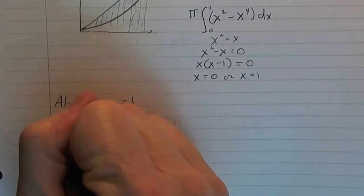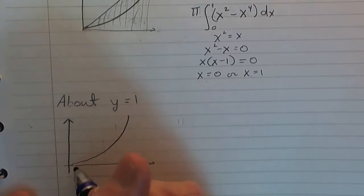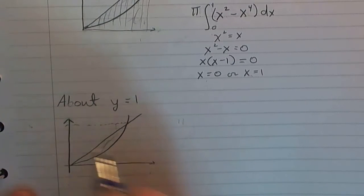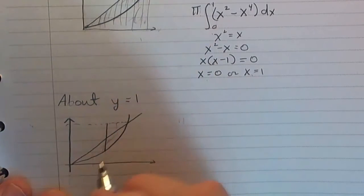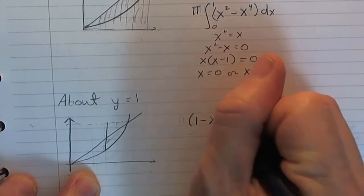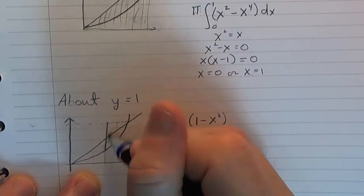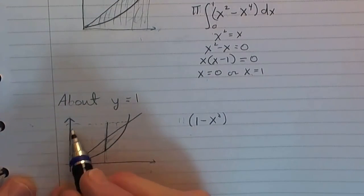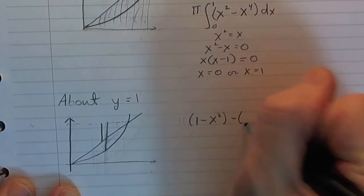Let's draw a picture to help visualize what we need to do. We've got f(x) equals x squared, y equals one, and we're revolving this region about y equals one. Think about the large radius: go all the way from one down to x squared — that would be one minus x squared. That's this length here; one minus x squared is the large radius.